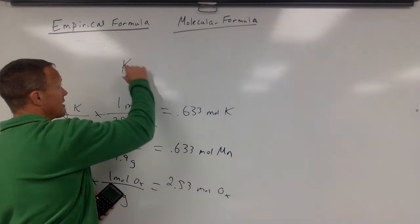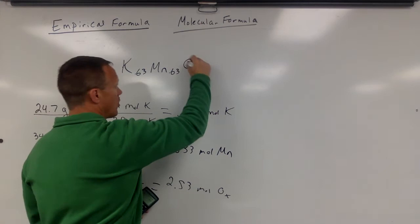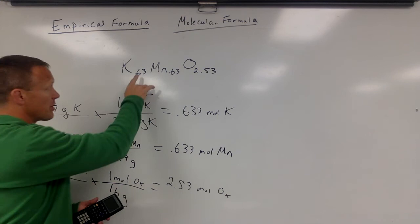We now need to write our formula based on these ratios. Well, I can't write this. I can't write K 0.63 Mn 0.63 O 2.53. They need to be a whole number of ratios. This is the ratio they are in, we just need to figure out whole numbers.